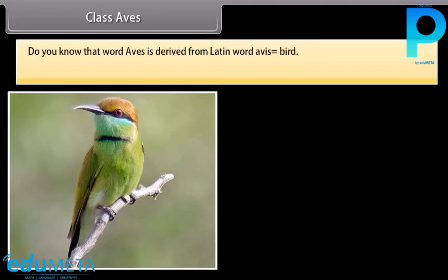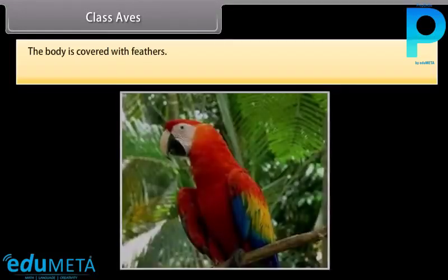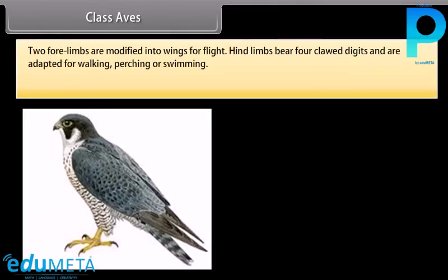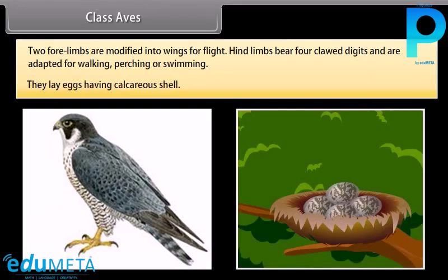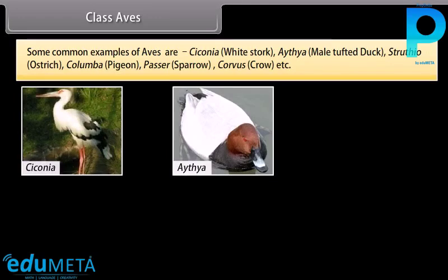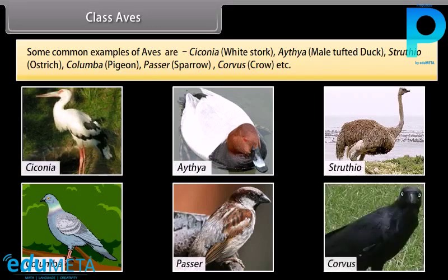Class Aves: the word avis is derived from Latin word avis, meaning bird. Their body is spindle- or boat-shaped, divisible into head, neck, trunk, and tail. The body is covered with feathers. They are warm-blooded with a four-chambered heart and breathe through lungs. Two forelimbs are modified into wings for flight. Hind limbs bear four clawed digits adapted for walking, perching, or swimming. They lay eggs having a calcareous shell. Common examples are Ciconia (white stork), Aythya (tufted duck), Struthio (ostrich), Columba (pigeon), Passer (sparrow), and Corvus (crow).